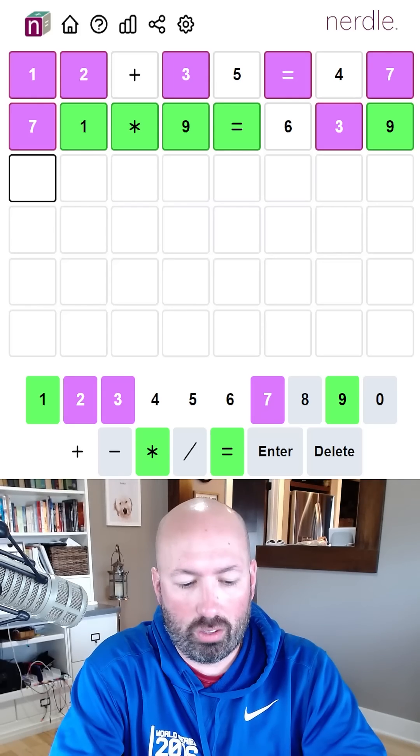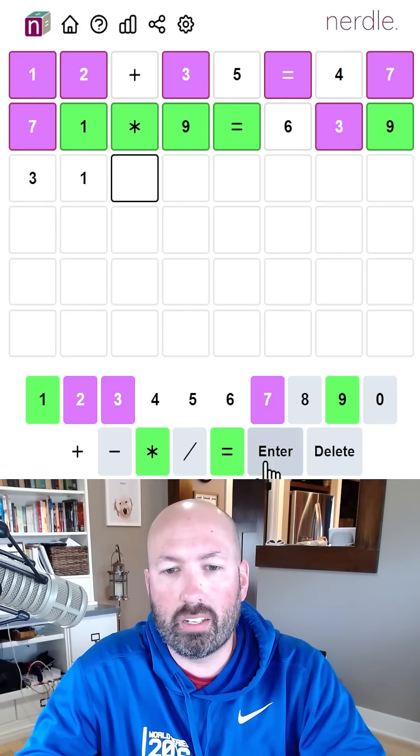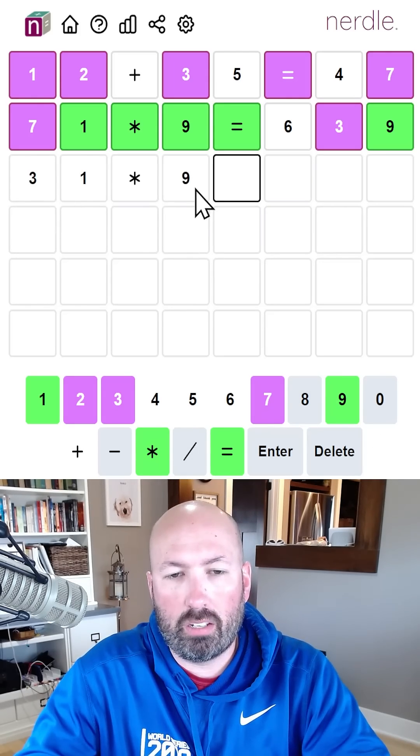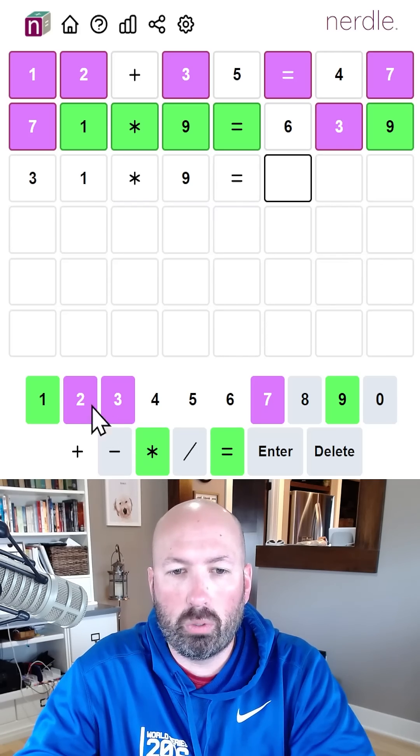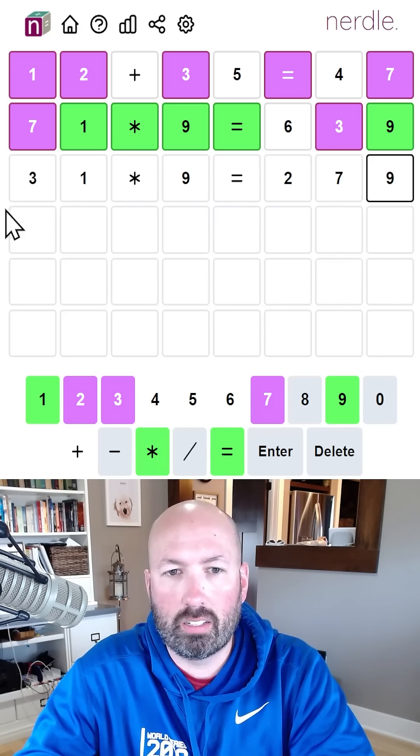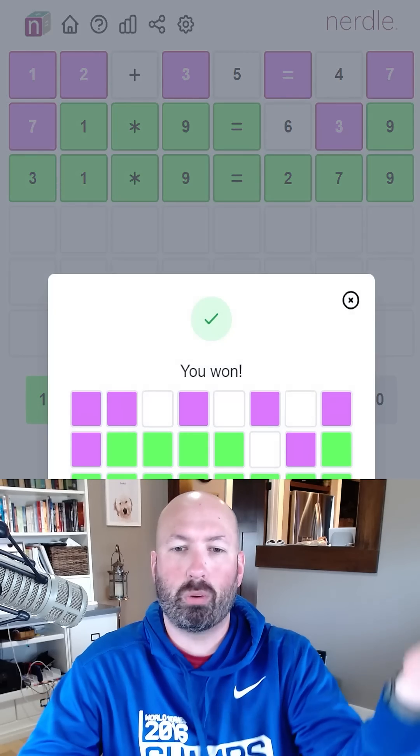So the three could be here. 31 times nine would be 279. I think that might work. Equals 279. Let's go for that. And that's what it was.